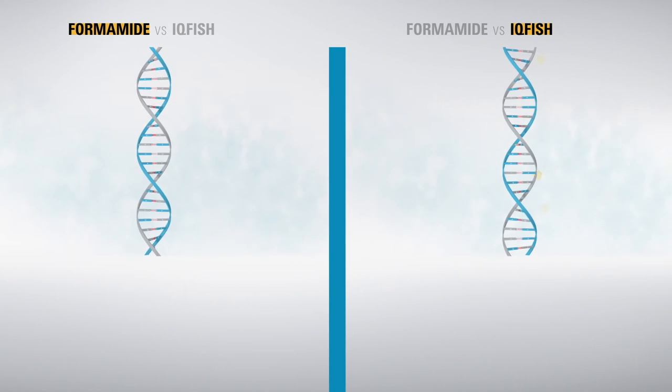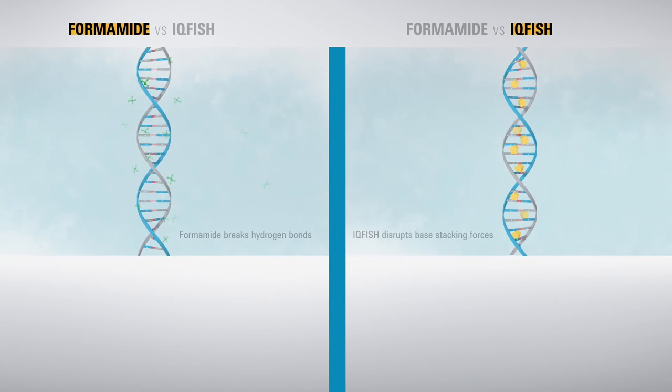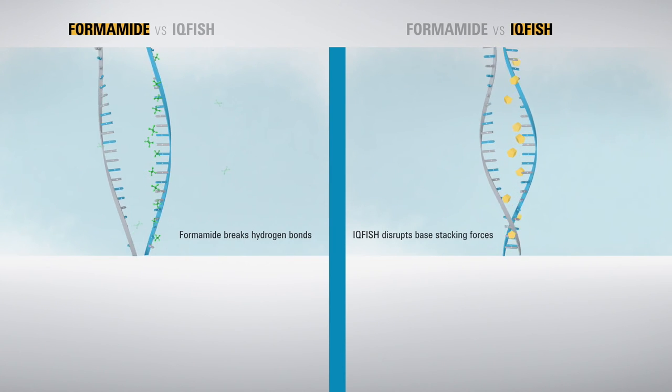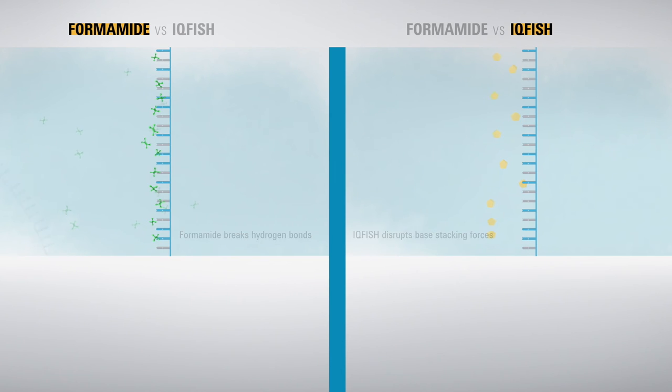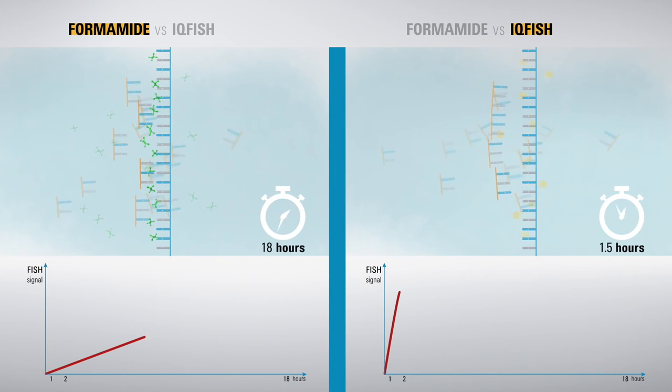Here, we summarize hybridization using formamide versus IQ Fish. Notice the tremendous gain in the speed of probe binding, as indicated by the signal strength.